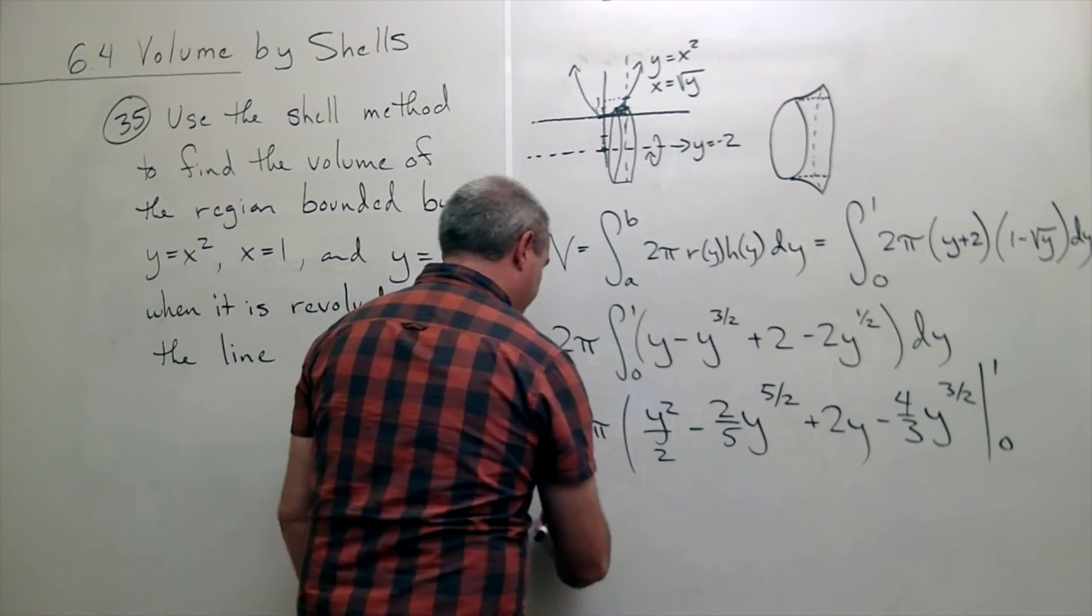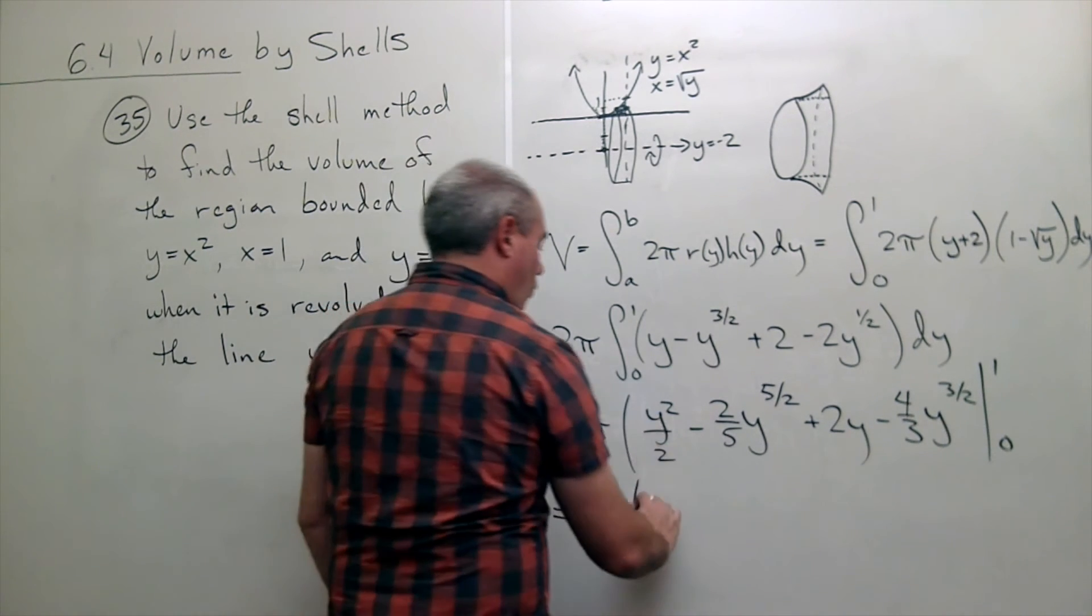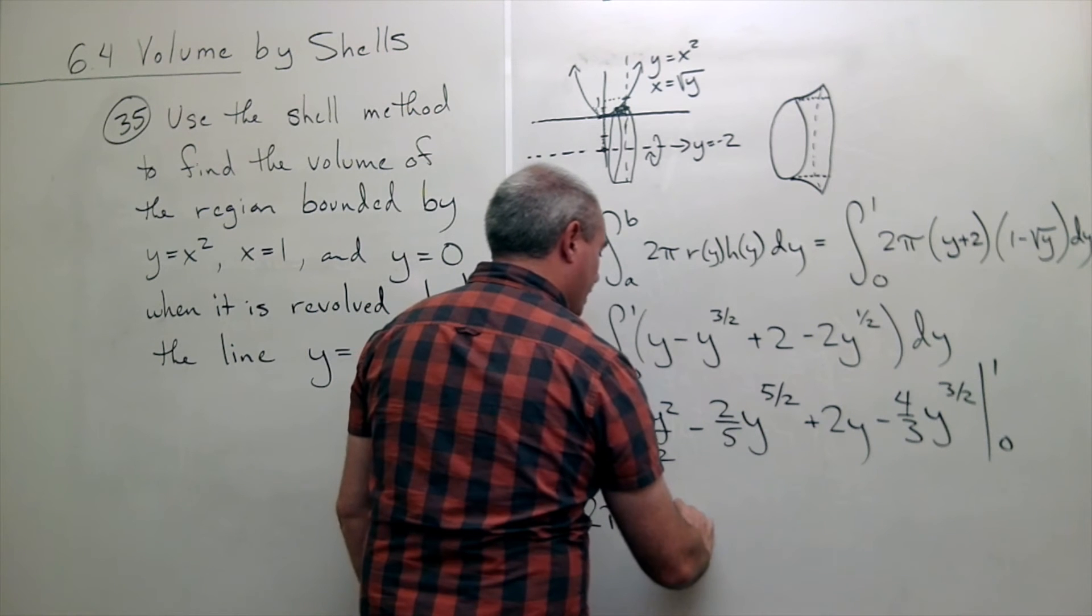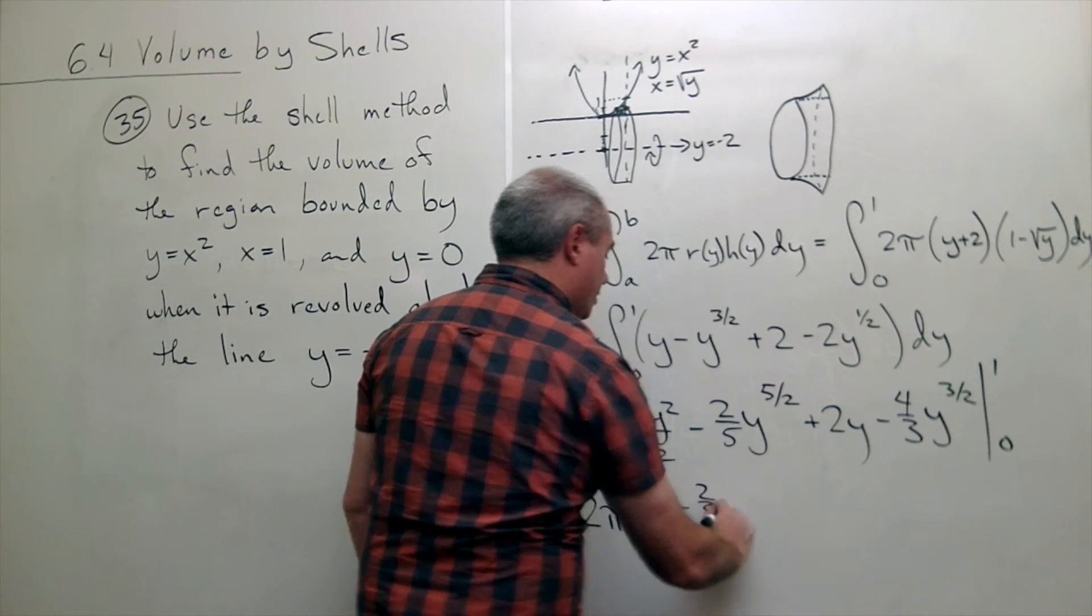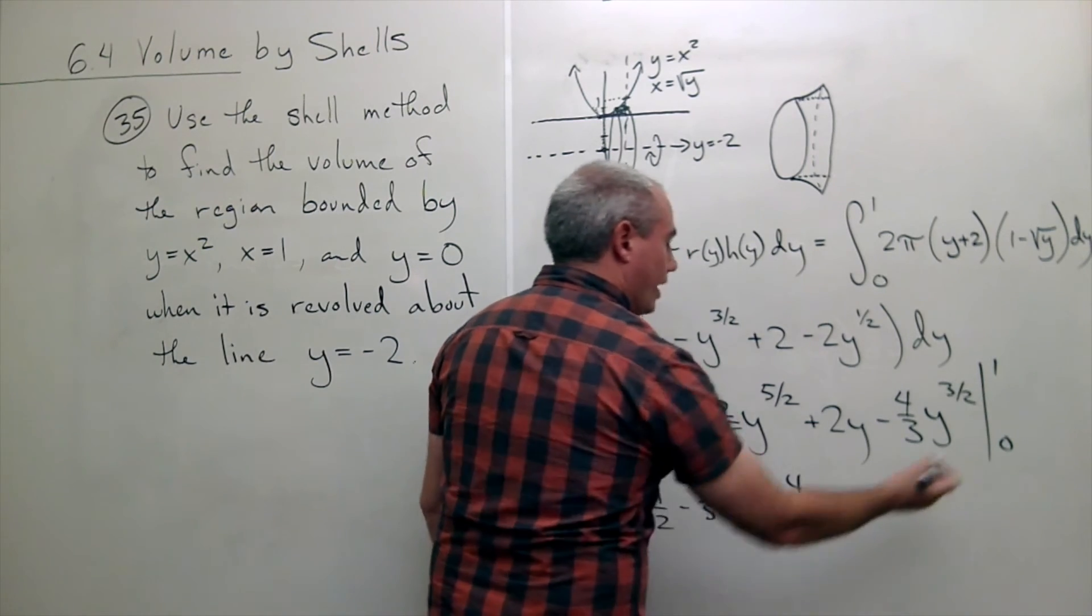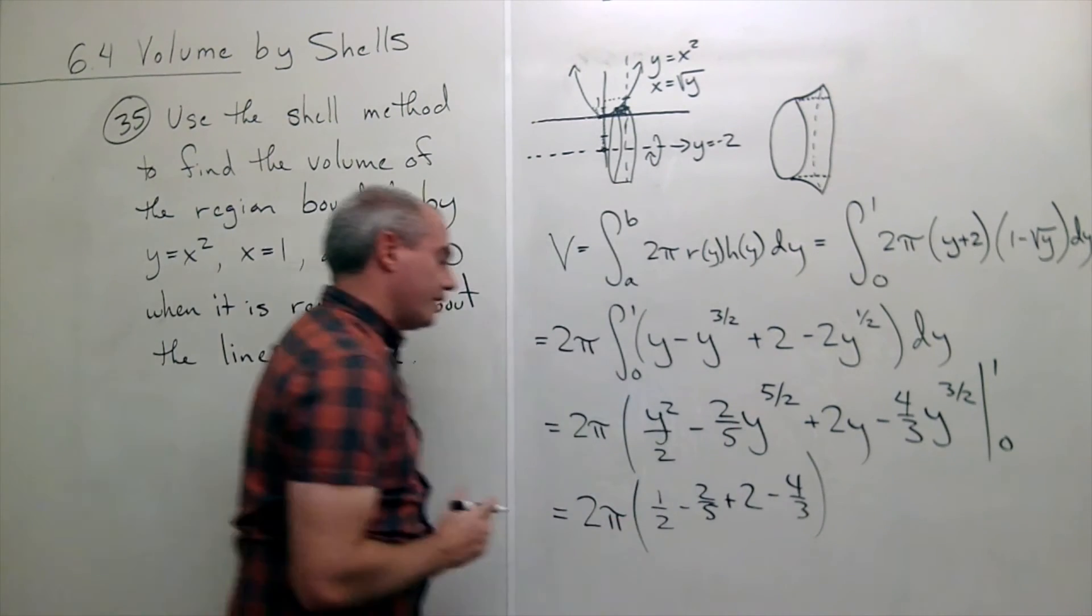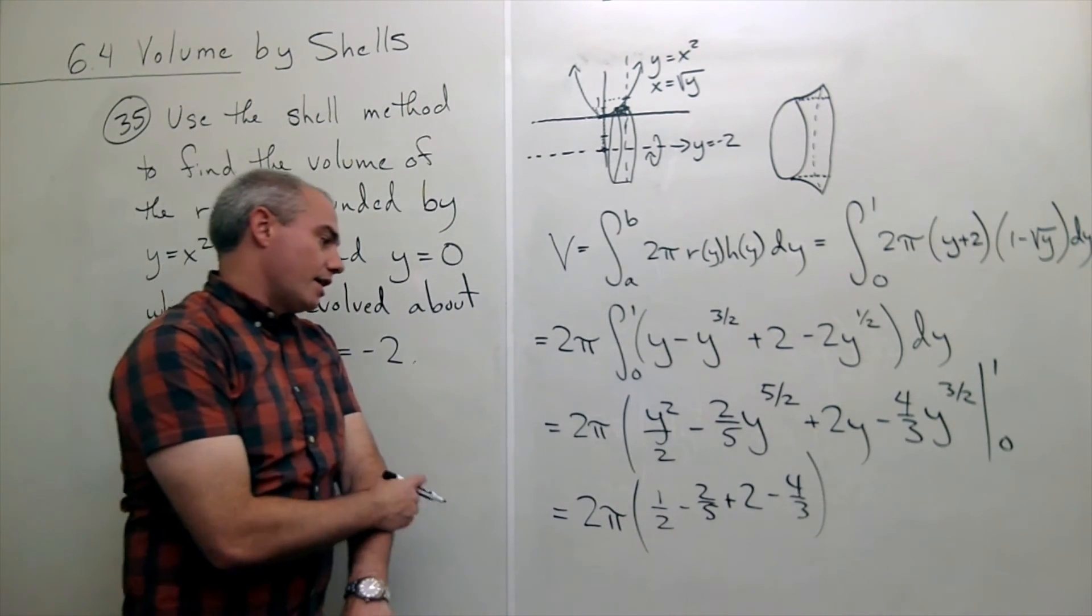Let's plug in the one. When I do, I get two pi times one half minus two fifths plus two minus four thirds. And when I plug in zero, I get zero, zero, zero, and zero, so that's it. If I combine those guys, I am done.